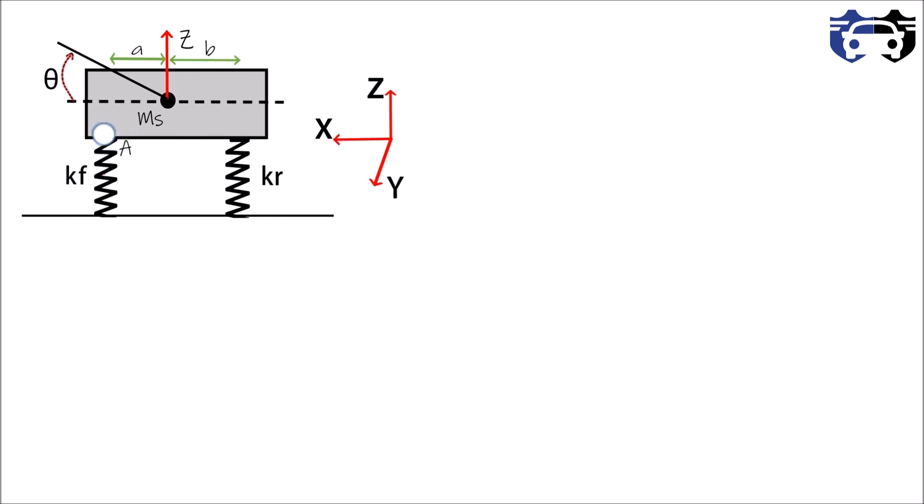As the car encounters the shock, the displacement of point a is given by z1 and the displacement of point b is given by z2. We can write from the figure that z1 equals to z plus a multiply by theta, and z2 equals to z minus b multiply by theta.